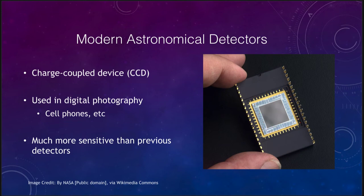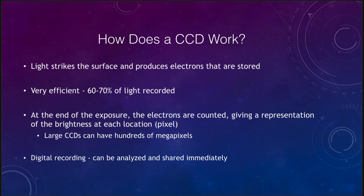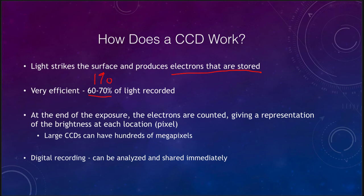Let's look in a little more detail about how this works. In a CCD, light strikes the surface and produces electrons that are stored in the chip. Once you're done with your image and read it out, you can count the number of electrons. This is much more efficient — remember that a photographic plate recorded only about one percent of the light. With a CCD, we can record 60 to 70 percent of the light, meaning exposure times can be much less. Something that required an hour on a photographic plate may be done in a minute or two on a CCD.